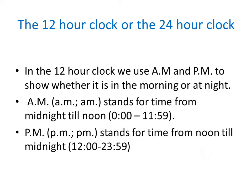There are twenty-four hours in a day. When telling the time in English you can use the twelve-hour clock or the twenty-four hour clock. In the twelve-hour clock we use a.m. and p.m. to show whether it is in the morning or at night. A.m. stands for time from midnight till noon. P.m. stands for time from noon till midnight.